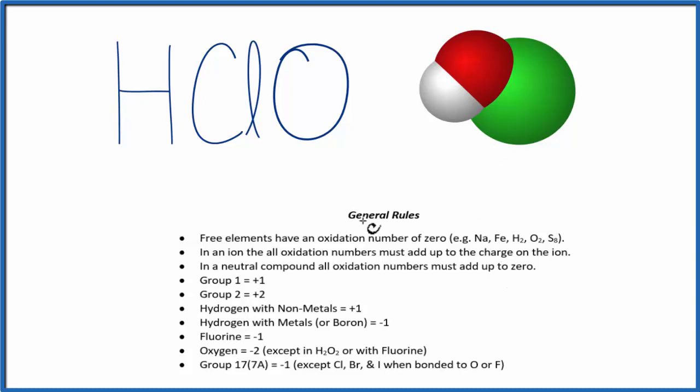So we'll use these rules here to figure out those oxidation numbers. We look down the list, we see hydrogen here, when it's bonded to non-metals, and the oxygen, that's a non-metal. It's a plus one. So we know the oxidation number of hydrogen is plus one.